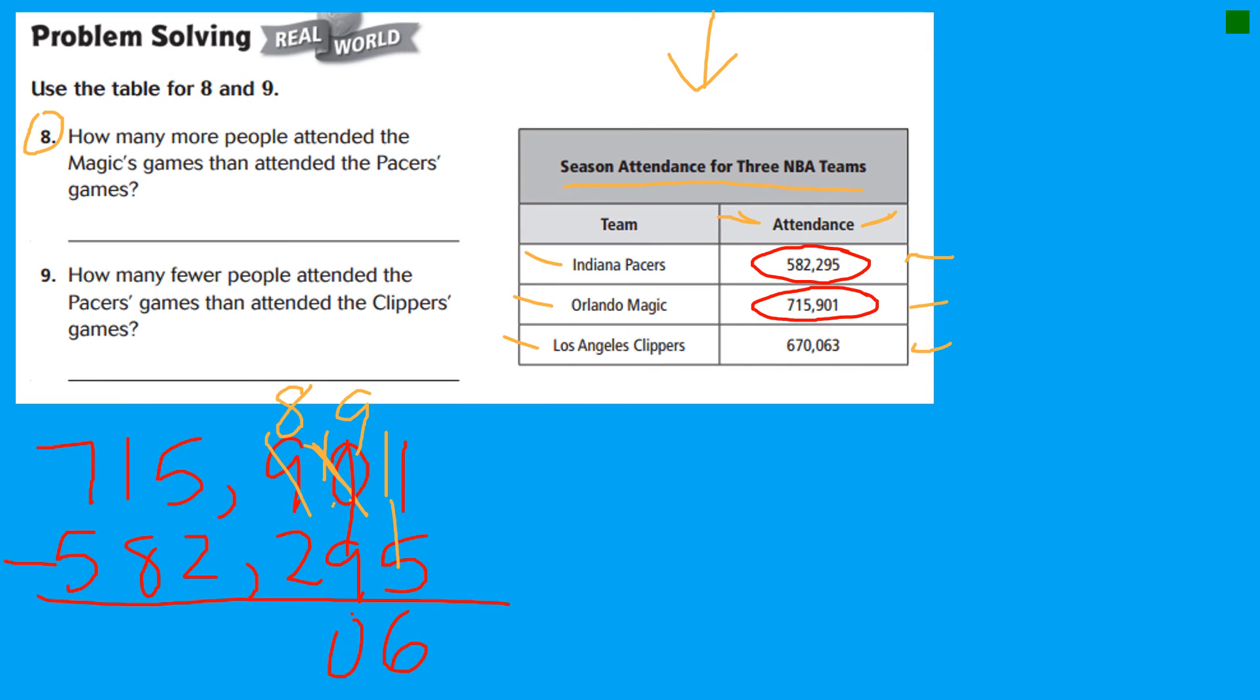Nine minus nine. Zero. Eight minus two. Six. Five minus two. Three. One minus eight. Regroupie. 11 minus eight. This one I'm going to count up. I'm going to think eight in my head. Eight, nine, ten, eleven. That's three. And then the last one, six minus five. One. So the difference in the attendance is 133,606. That's how many more people attended the Magic games. So I'm going to put people like that.